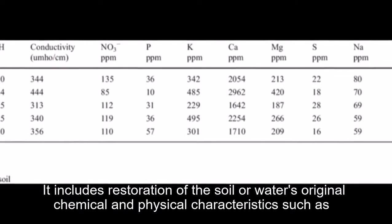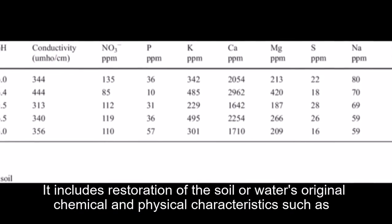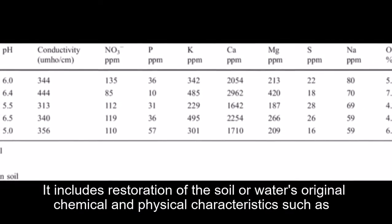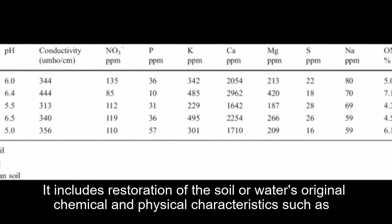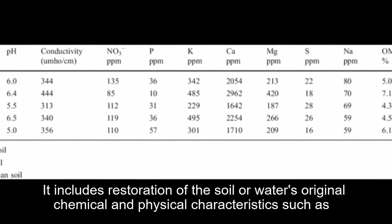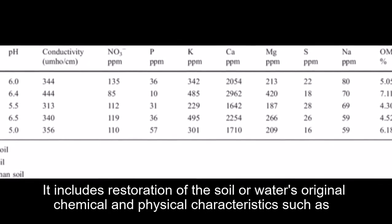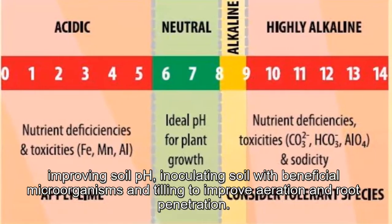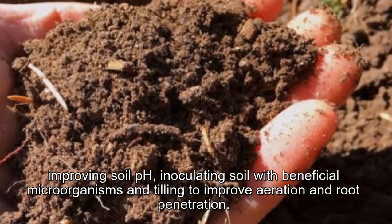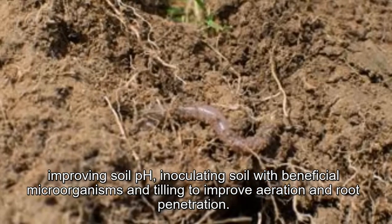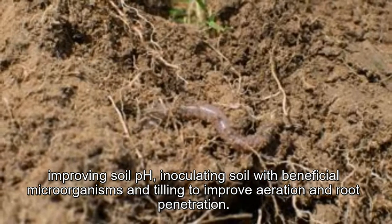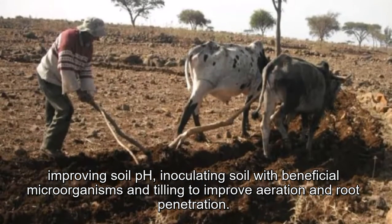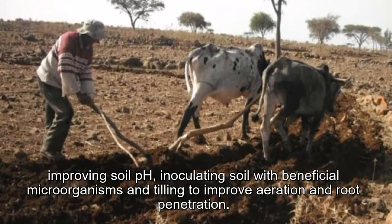Active restoration includes restoration of the soil or water's original chemical, biological, and physical characteristics, such as improving soil pH, inoculating soil with beneficial microorganisms, and tilling to improve aeration and root penetration.